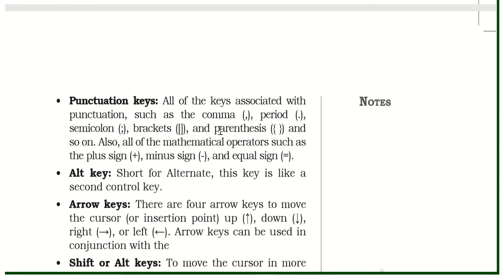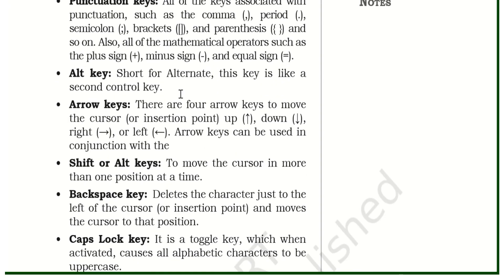When you write sentences, there are punctuations used — like comma, period, semicolon, brackets, parentheses, plus/minus sign, equal sign, and full stop. All these are called punctuation keys. The Alt key is called the alternate key, and we always use it with another key.